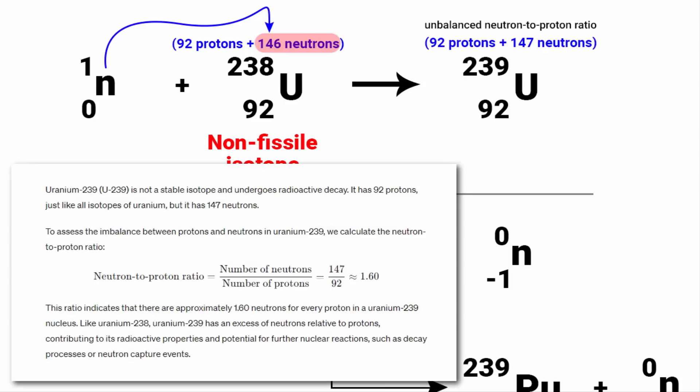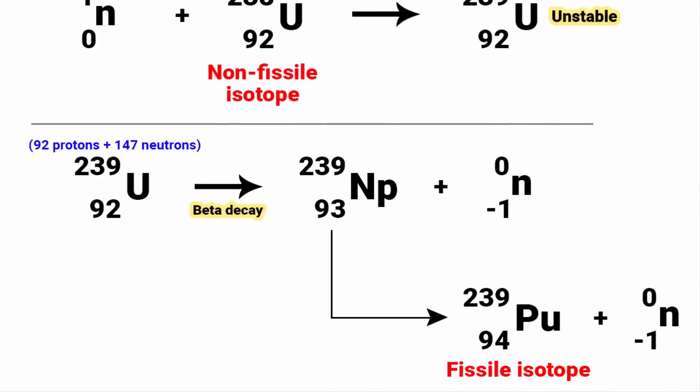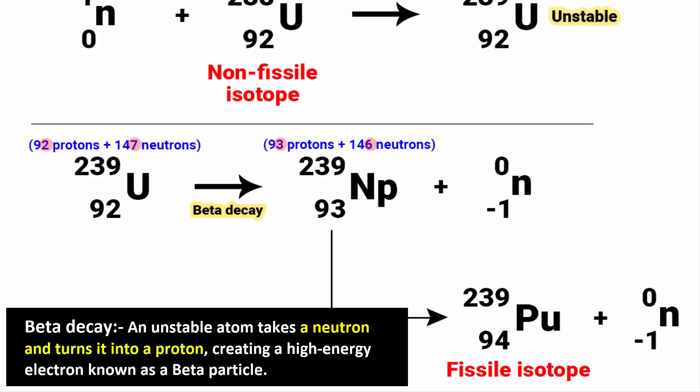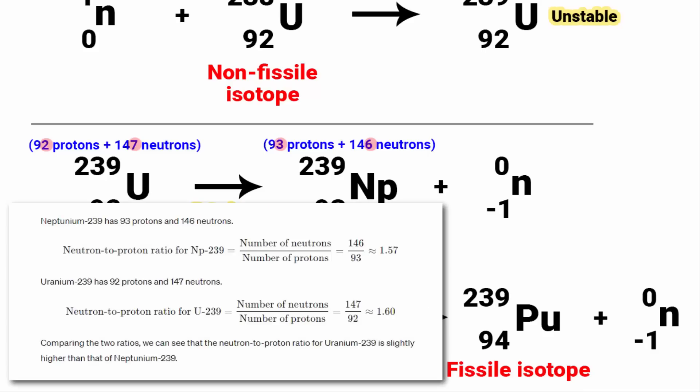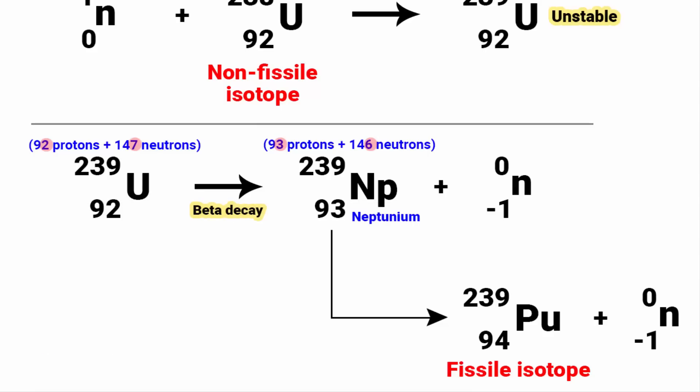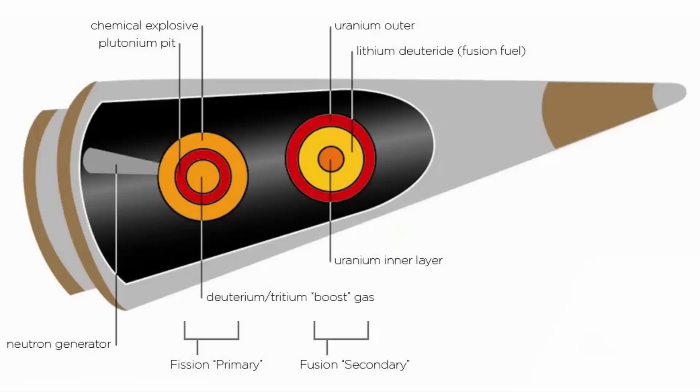Now, because of the unbalance in the neutron to proton ratio, uranium-239 is unstable and undergoes beta decay, meaning it emits an electron to achieve somewhat stability. In this process, one of its neutrons decays into a proton. This reduces the neutron to proton ratio and transforms into neptunium-239, which is slightly more stable. However, neptunium-239 is also not that stable and undergoes further beta decay. That is, one of its neutrons decays into a proton to eventually become plutonium-239, which is capable of sustaining a nuclear fission chain reaction. Plutonium-239 is used as fuel in nuclear reactors and nuclear weapons, precisely because of its ability to undergo fission.